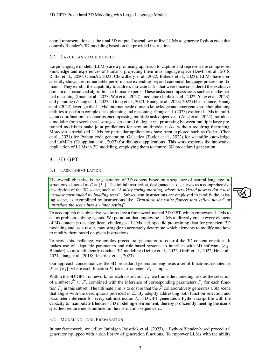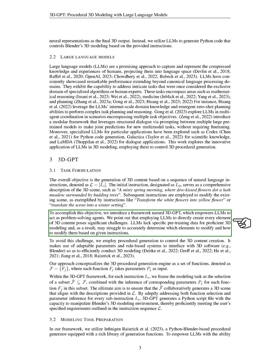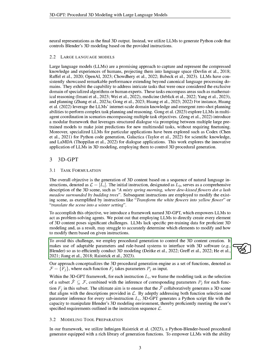Our main goal is to generate 3D content based on a series of natural language instructions. The first instruction provides a comprehensive description of the 3D scene, like 'a misty spring morning, where dew-kissed flowers dot a lush meadow surrounded by budding trees.' Subsequent instructions are used to modify the existing scene, such as 'transform the white flowers into yellow flowers' or 'translate the scene into a winter setting.' To achieve this, we introduce 3D GPT, which allows LLMs to act as problem-solving agents. However, using LLMs to directly create every element of 3D content is challenging, as they lack specific pre-training data for proficient 3D modeling. To overcome this, we use procedural generation to control the 3D content creation, using adaptable parameters and rule-based systems to interface with 3D software like Blender.